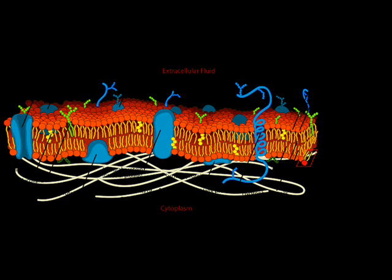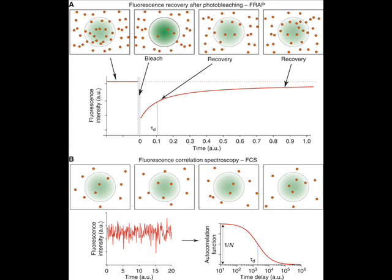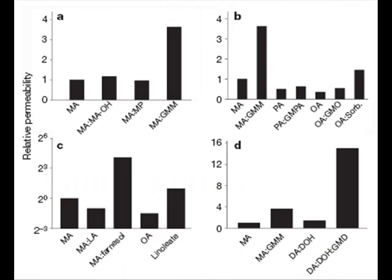So when you make membranes out of fatty acids, they have very different properties. They're much more dynamic. The molecules can flip across the membranes very rapidly. And as it turns out, fatty acid membranes are also a lot more permeable to nucleotides.